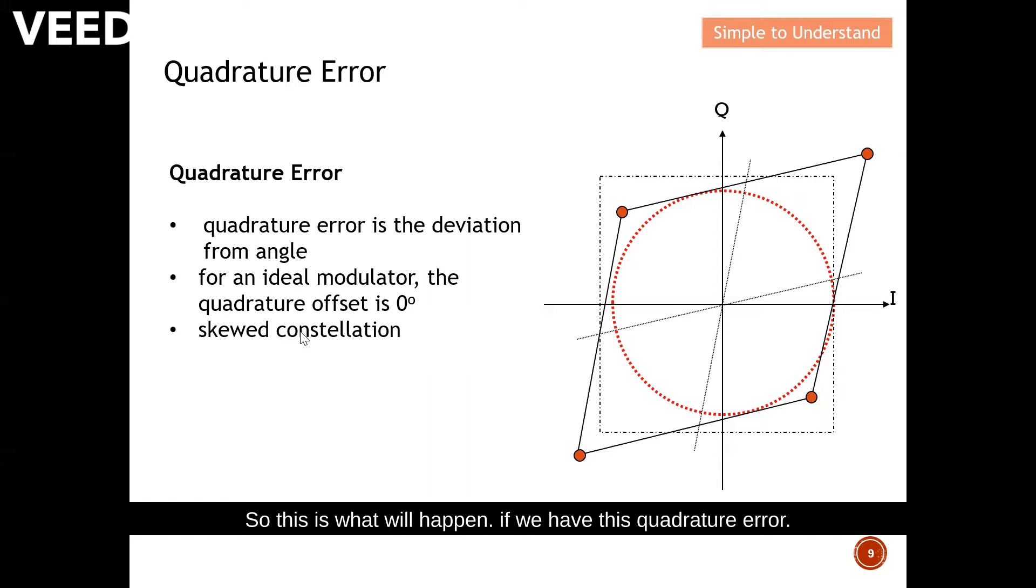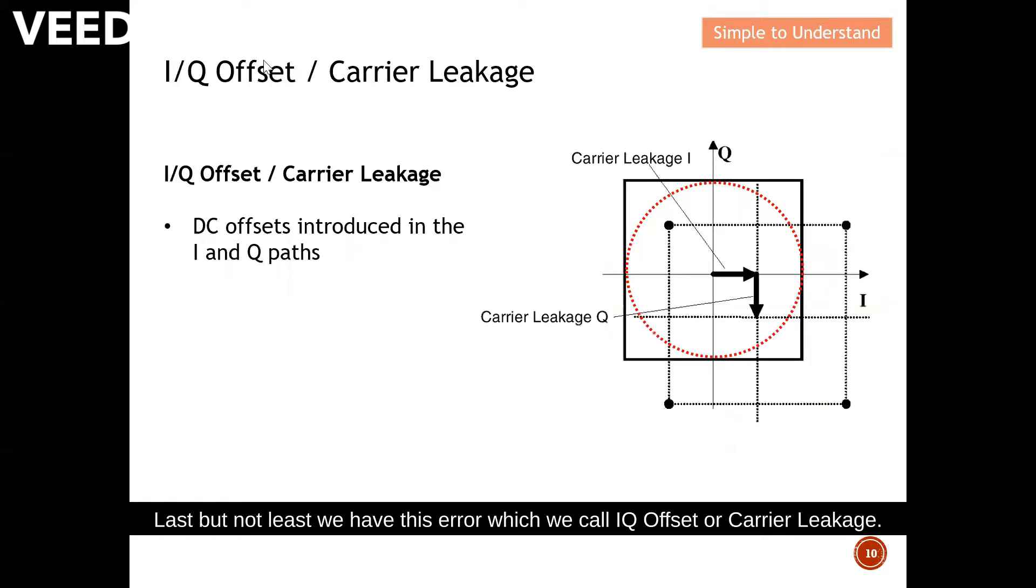And last but not least, we have this error which we call IQ offset or carrier leakage. It may be a combination of the previous two faults, but this is actually caused by DC offset introduced in both the I and Q path. Take a look over here, so instead of exactly at this point, there is actually a deviation from here and here. And because of this, instead of perfect at this point, this thing moves here and here and this becomes your resulting point here.